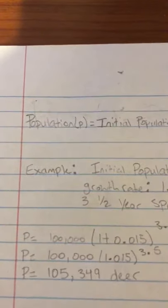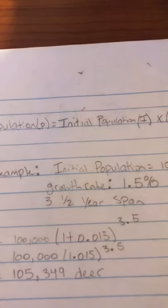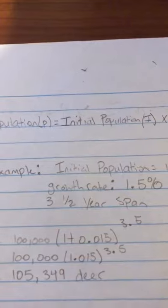In order to get your equation, it would be P equals 100,000 times 1.015 to the 3.5 power.